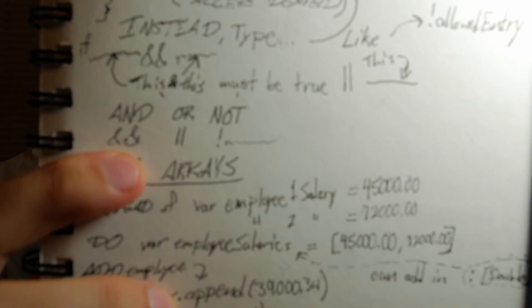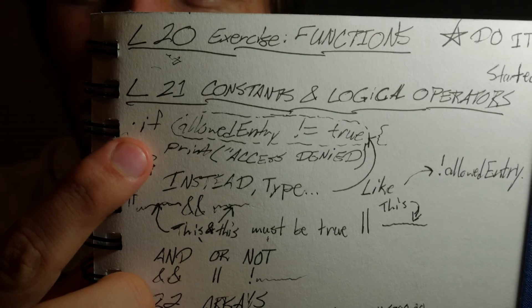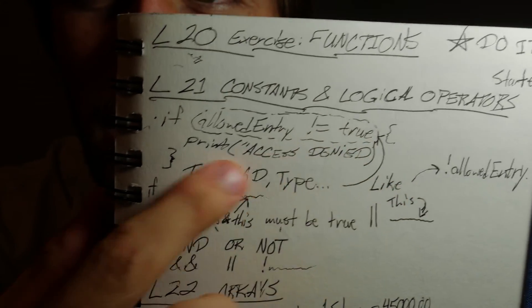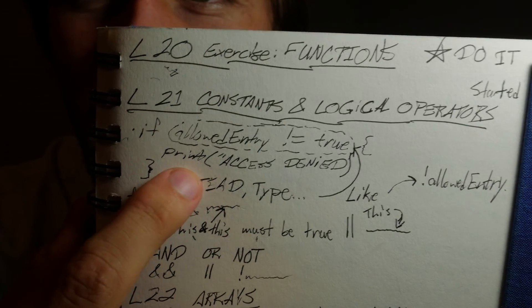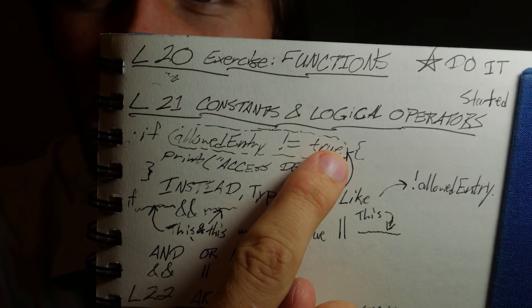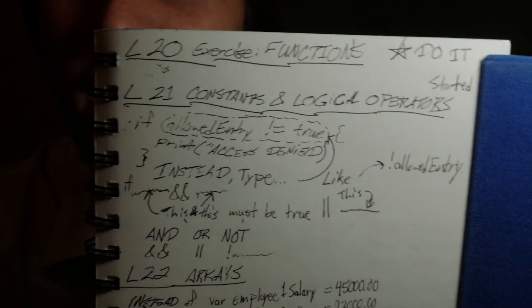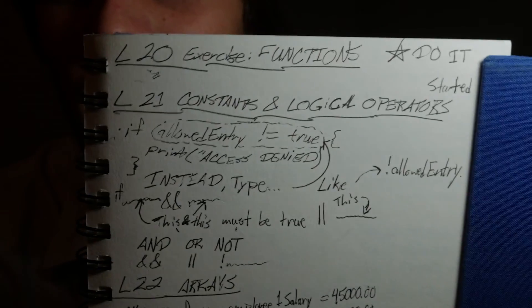Lecture 21 is constants and logical operators. Before we had boolean operators - two equal signs, greater than, greater than or equal to, less than, less than or equal to. But now we have logical operators which are AND, OR, and NOT. AND is double ampersand, OR is double pipes, and NOT is exclamation point before the word. You may be used to doing 'if yada yada is not equal to this' - the better way is to just put the exclamation point before the word. It means exactly the same thing but it's a lot simpler.